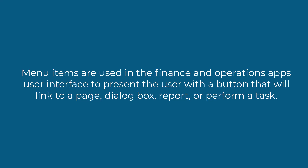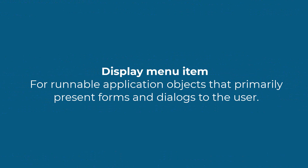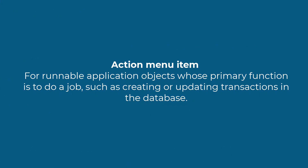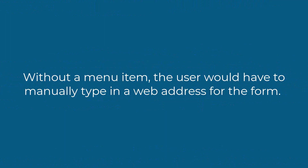The different types of menu items available in Visual Studio are: Display Menu Item, which is a runnable application object that primarily presents forms and dialogues to the user; Output Menu Item, which is a runnable application object whose primary function is to print a result such as a report; and Action Menu Item, which is a runnable application object whose primary function is to perform a job such as creating or updating a transaction in the database. Without menu items, the user would have to manually type in a web address for a form. With menu items, the user has a simpler way to navigate to the page by selecting a button or a link.